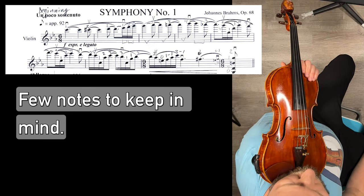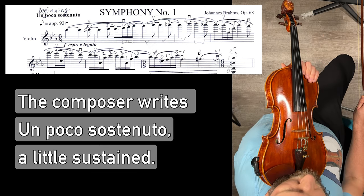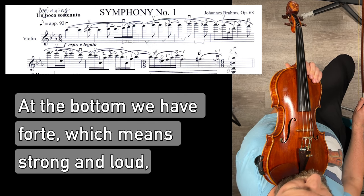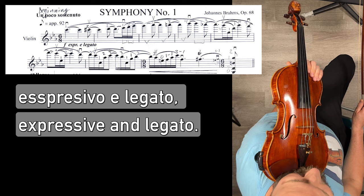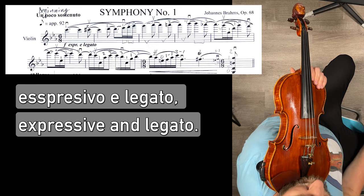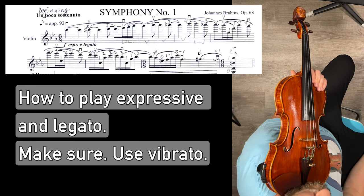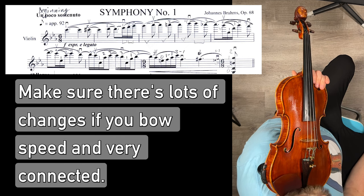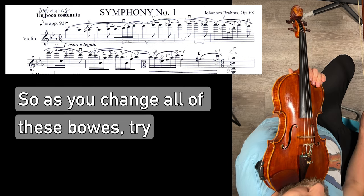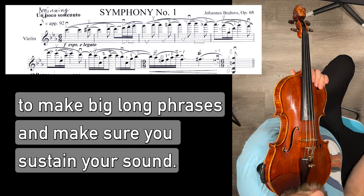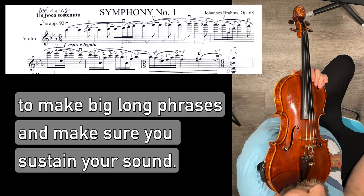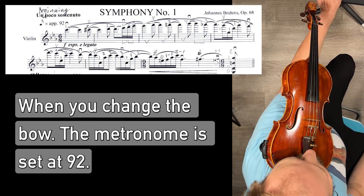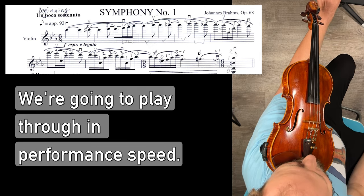A few notes to keep in mind. The composer writes un poco sostenuto, a little sustained. At the bottom we have forte, which means strong and loud. Espressivo e legato, expressive and legato. How do we play expressive and legato? Make sure you use vibrato. Make sure you have lots of changes of your bow speed and very connected. So as you change all of these bowings, try to make big long phrases and make sure you sustain your sound when you change the bow. Metronome is set at 92. We're going to play through in performance speed.